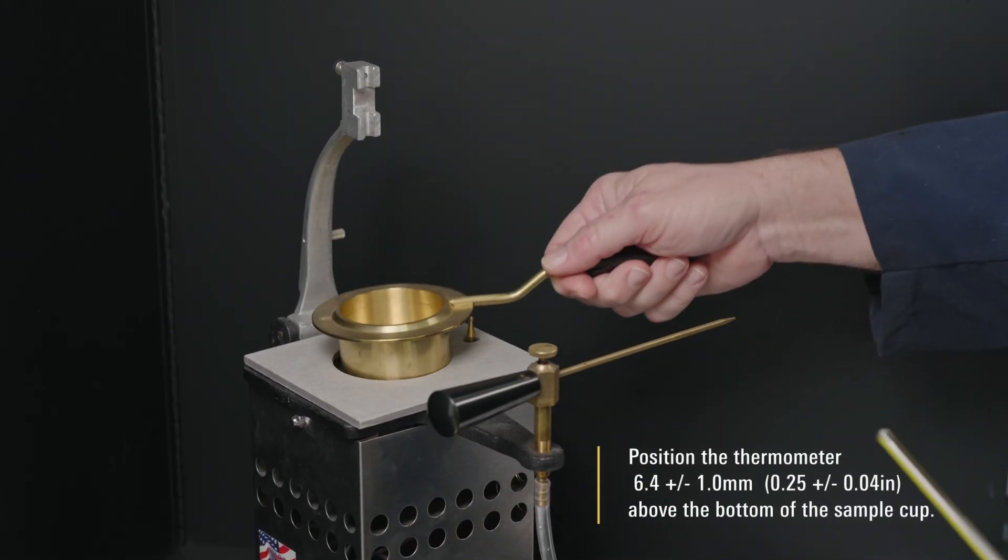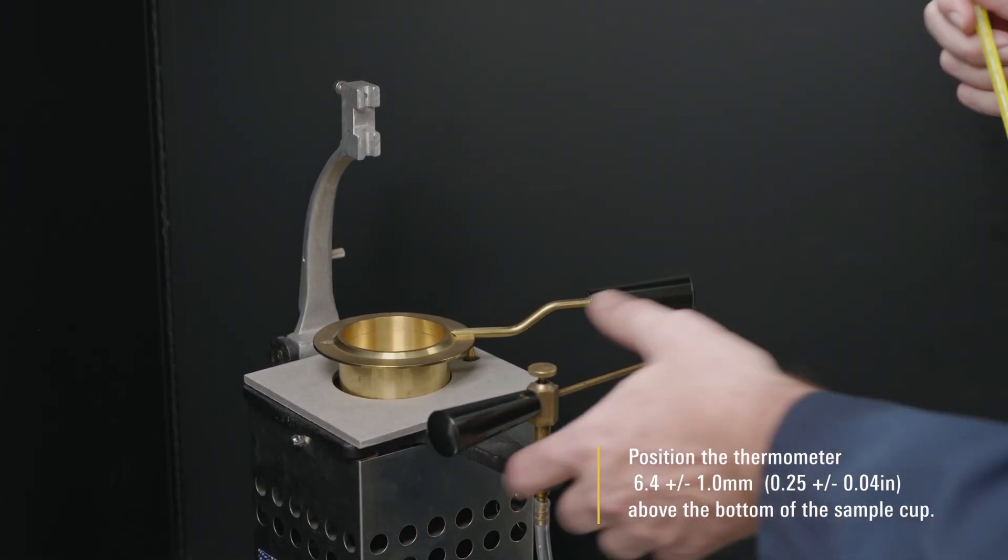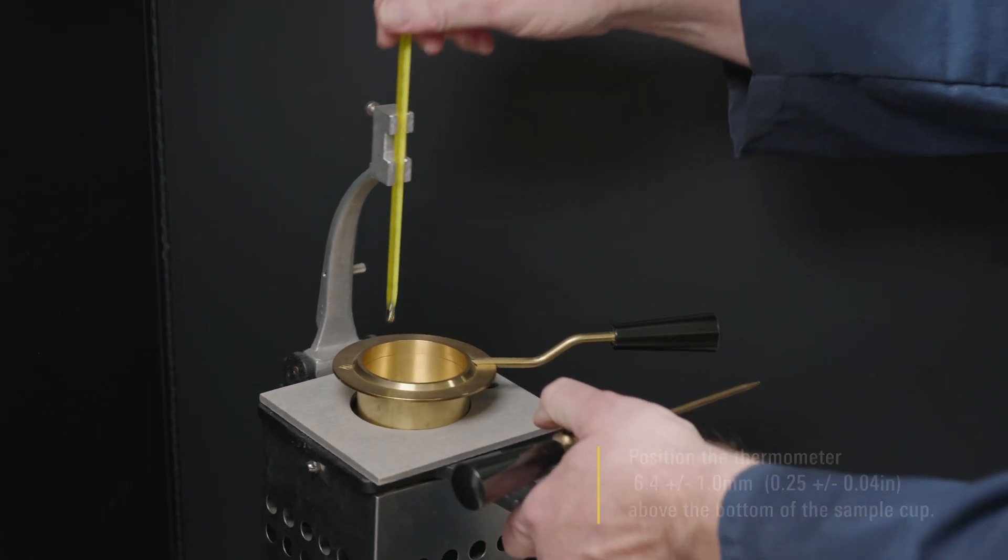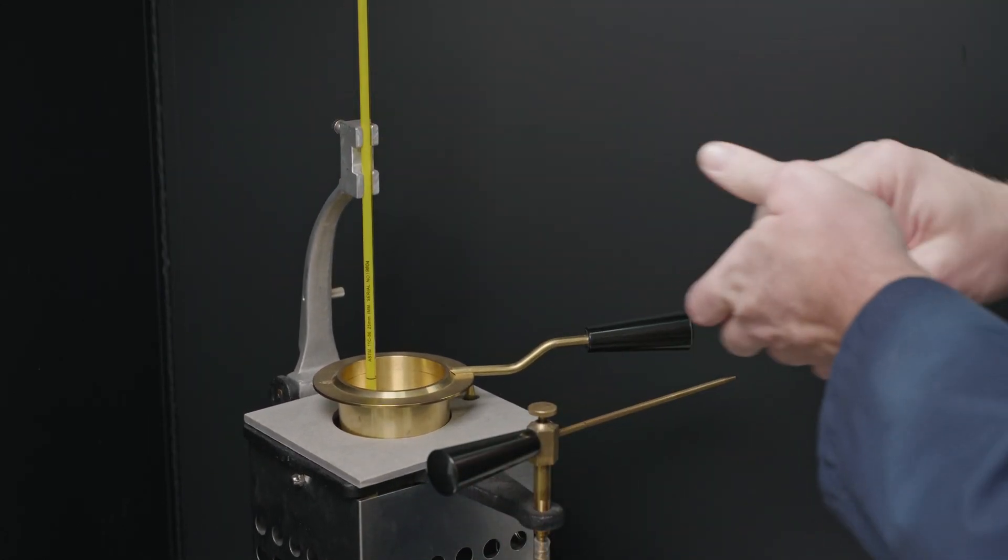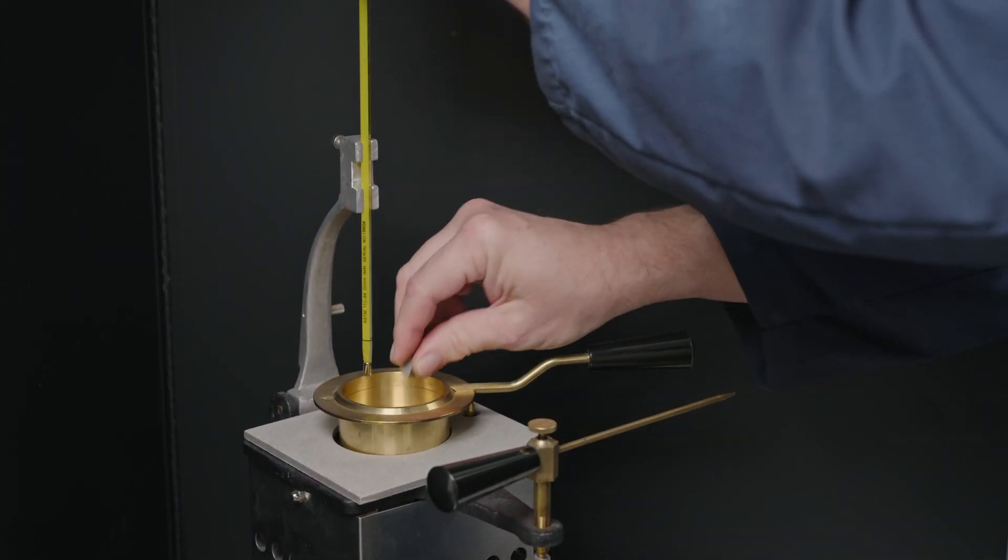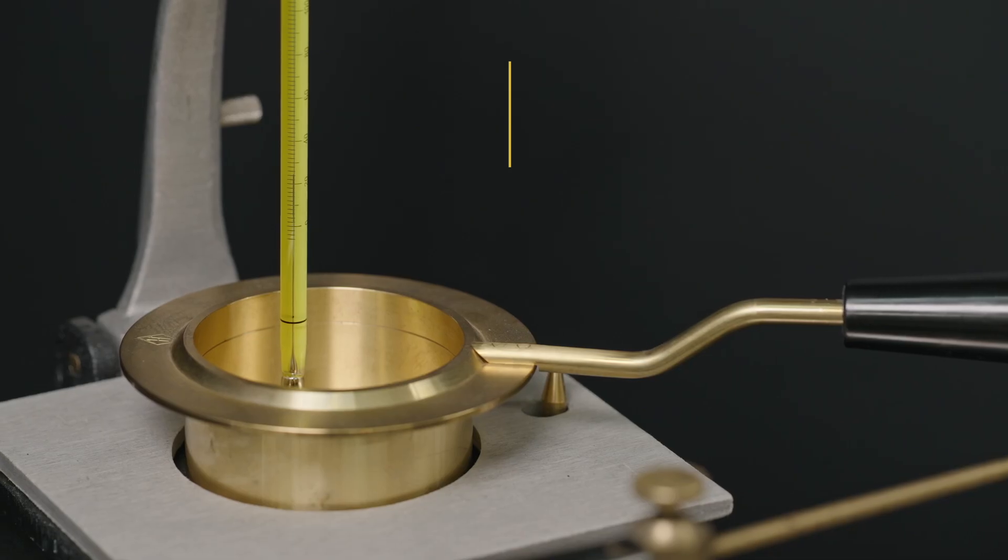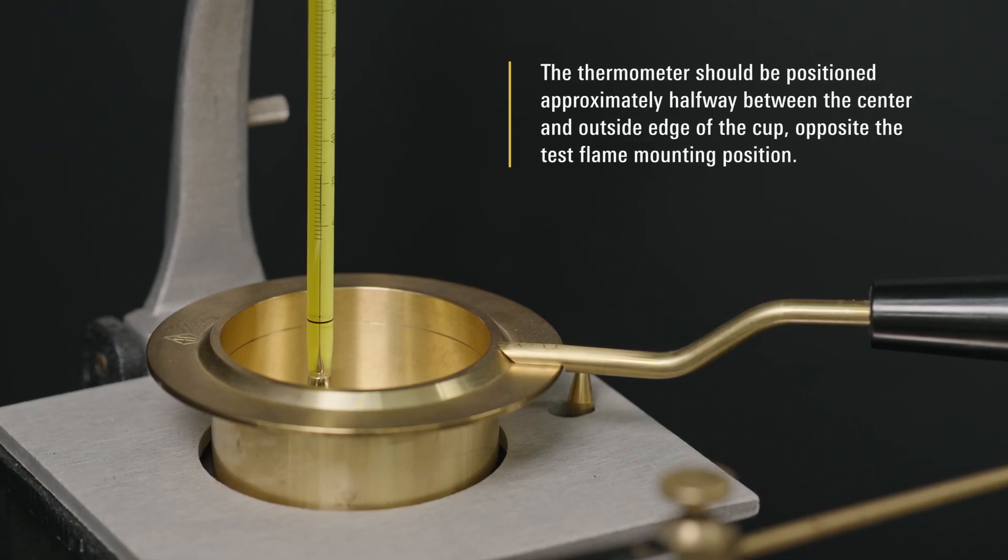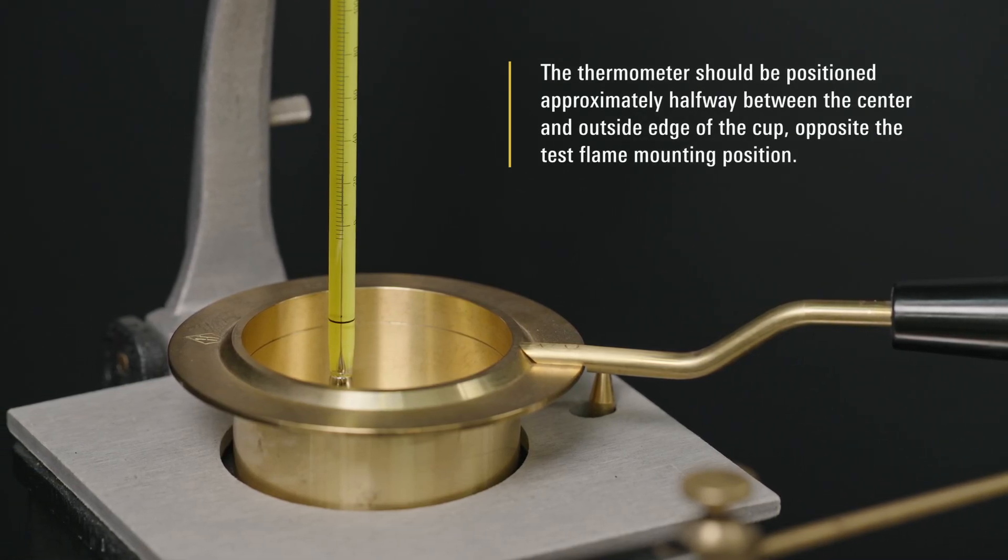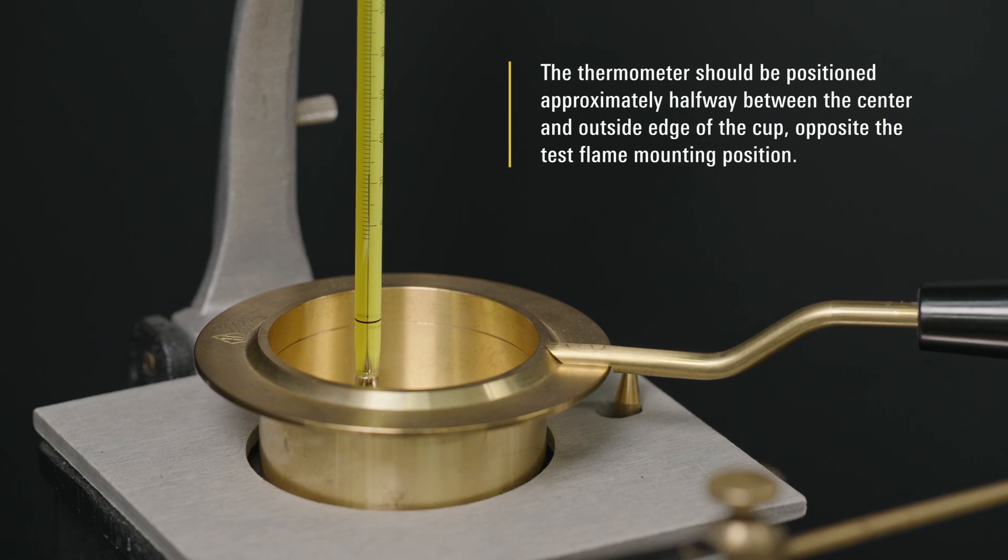Position the thermometer 6.4 ± 1 mm above the bottom of the sample cup. A BBR mold end piece is a useful shim to set this depth. The thermometer should be positioned approximately halfway between the center and outside edge of the cup, opposite the test flame mounting position.